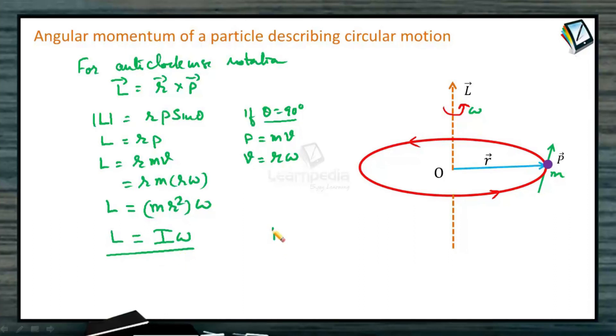So in analogous, linear momentum is mass into velocity, v is the linear velocity, and angular momentum is I into omega. Omega is the angular velocity. In linear direction or translatory motion, linear velocity is v. In rotatory motion, angular velocity is omega. Mass is the measure of inertia in the translatory system. Then here in rotatory system, I is the measure of inertia or it is called moment of inertia. So angular momentum of the particle describing circular motion, L is equal to I omega.